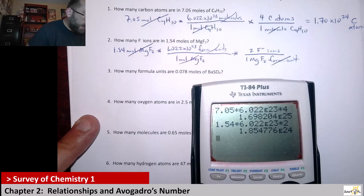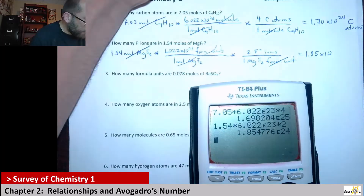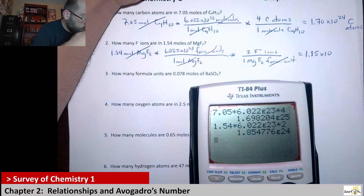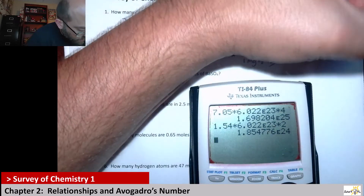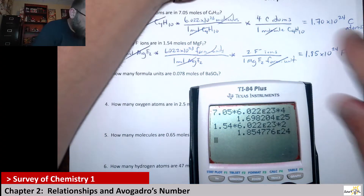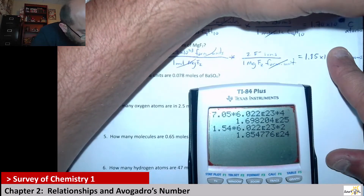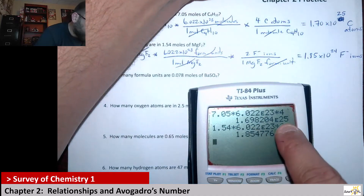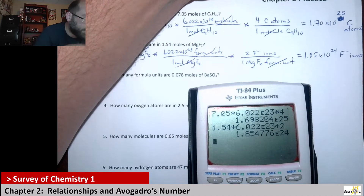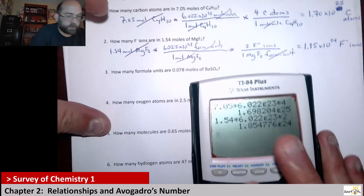That gives me 1.85 times 10 to the 24 fluoride ions. Wait — I just realized something. That's not supposed to be to the 24th, that's supposed to be to the 25th. See, there's the calculation — I put the wrong number. It's supposed to be 25. I knew something was off when those numbers were so close to one another.